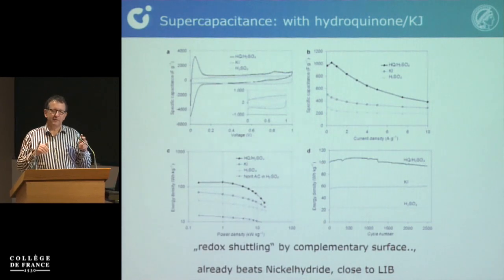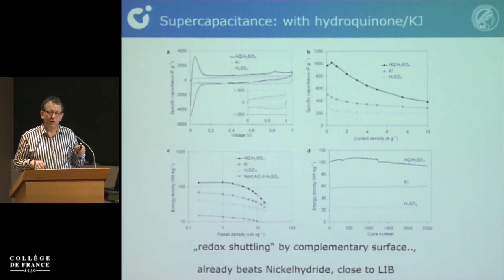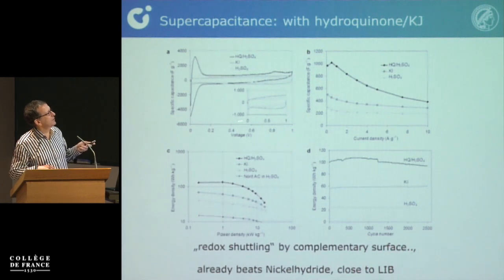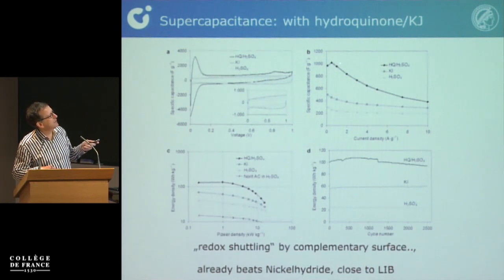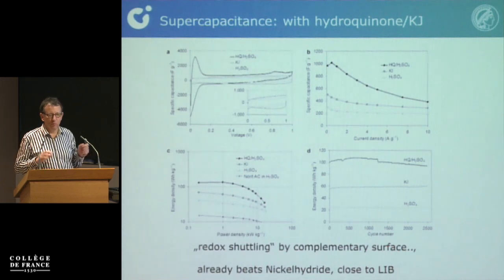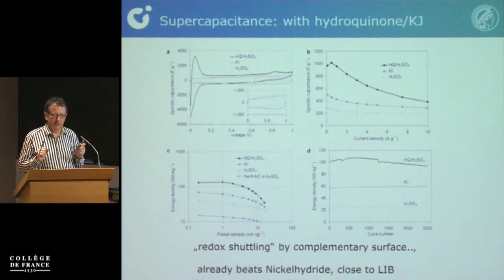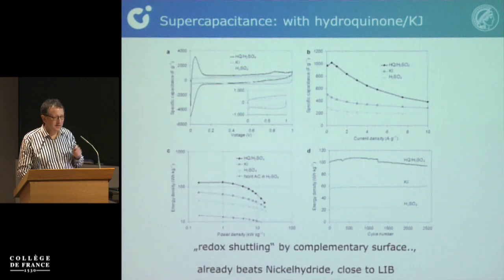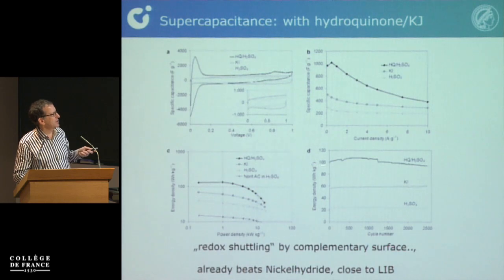For supercapacitors — same figures of merit. The exciting thing is these pores can be filled with reactive solvents: hydroquinone or iodide/triiodide — all formulated at very high concentration. The solvent is redox-active, and when you make such a measurement you can very easily reach 1,000 farad per gram. 1,000 farad per gram even beats the nickel hydride battery, and it's just carbon, sulfuric acid, hydroquinone, iodide — things which are rather simple.